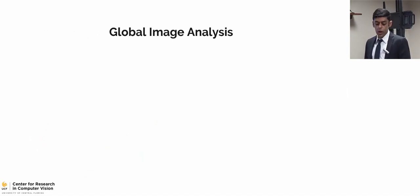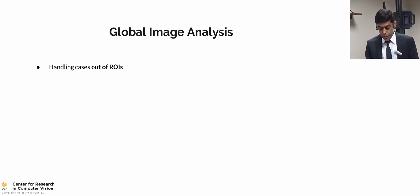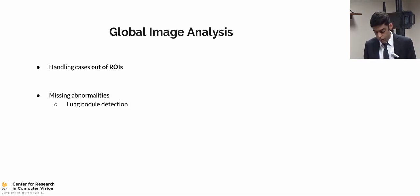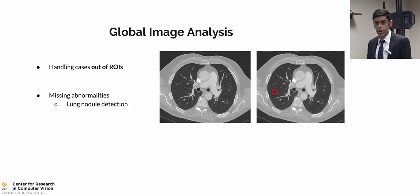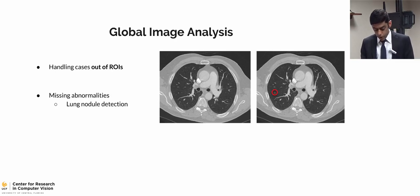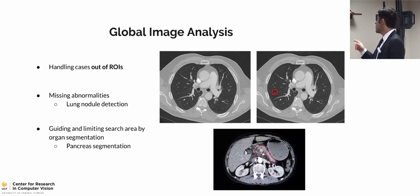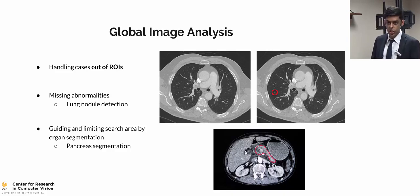Concluding the local image analysis, I now move to the global image analysis modules. The goal here is to handle regions outside the radiologist's regions of interest — cases the radiologist is not looking at. I start this chapter with the lung nodule detection framework, handling missing abnormalities in the lungs which can be because of very similar texture to neighboring tissues. I'll also conclude this chapter with the pancreas segmentation framework, with the goal of guiding and limiting the radiologist's search area by segmenting complex organs. The red boundary shows the pancreas boundary in a CT scan — it's very hard to distinguish, and abnormalities normally happen at the edges.